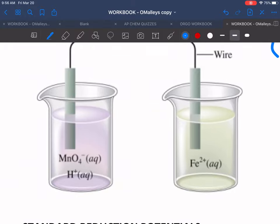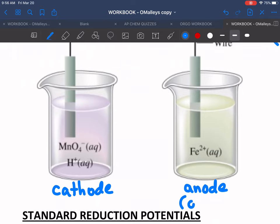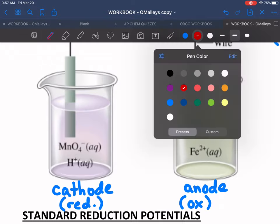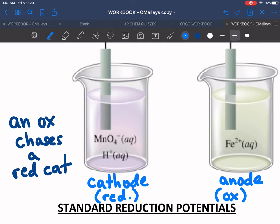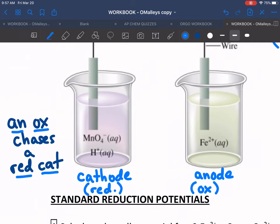So we give names to these separated parts. The site where oxidation is occurring is called the anode, and the site where reduction is occurring is called the cathode. You can remember that with a mnemonic: an ox chases a red cat. That reminds me that the anode is the site of oxidation and the cathode is the site of reduction. That's always true. That's what those words mean.